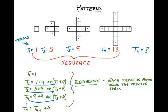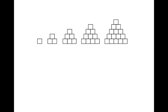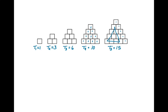Let's look at another example — a stack of boxes. Using the same idea, we look at how many boxes are in each stack. Our first term has one box, our second term has three, our third term has six, and our fourth term — counting them up — has ten. And our fifth term has fifteen.